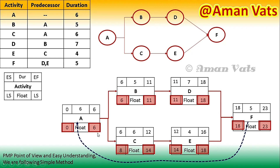We also calculated 6 plus 6 equals 12, because the early finish of 6 carries forward and 6 plus 6 is 12. Then 12 plus 4 equals 16. Now here we have 16 and here we have 18, so we take the greatest value, which is 18. Then 18 plus 5 equals 23. That was all about calculating early start and early finish using the forward pass method, and now I'm going to the backward pass.